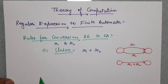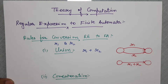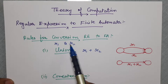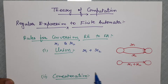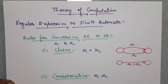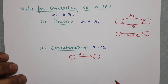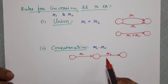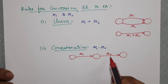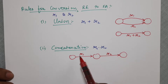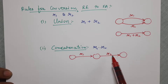The second basic operation on regular expressions is concatenation. If there are two regular expressions R1 and R2, we concatenate as R1 followed by R2. In the automata, this is drawn as R1 followed by R2 in sequence. Similarly, if you want to write R2 R1, you place R2 first and then R1.